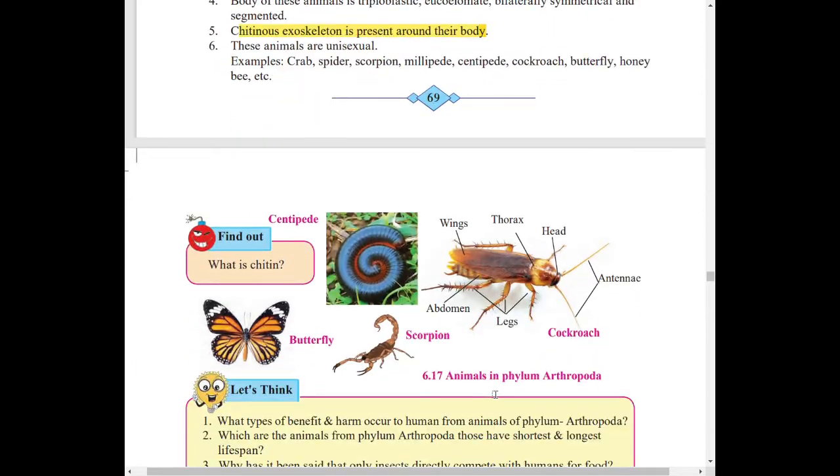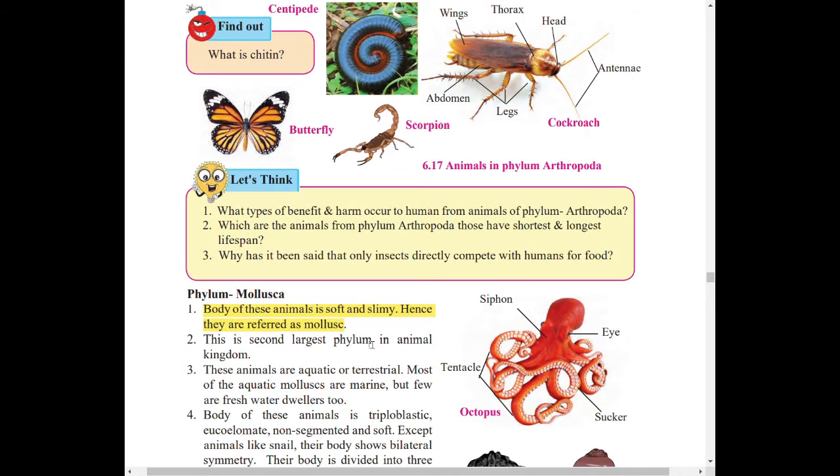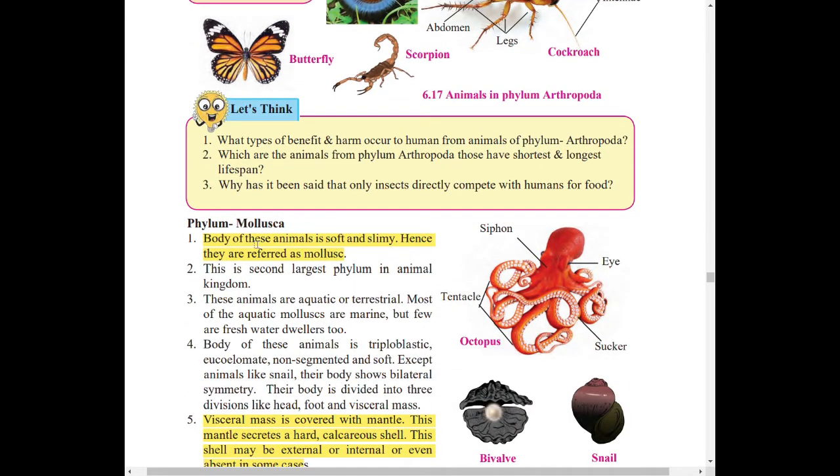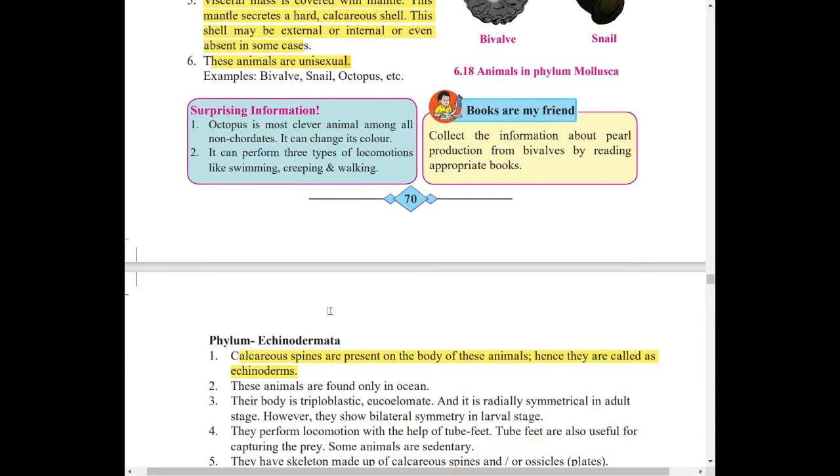Phylum Mollusca. What to read in Mollusca? Similarly first point, and then visceral mass is covered with mantle. This mantle secretes hard calcareous shell. This shell may be external or internal or even absent in some cases. You have to remember this point. And these animals are unisexual, means male and female are in separate bodies.